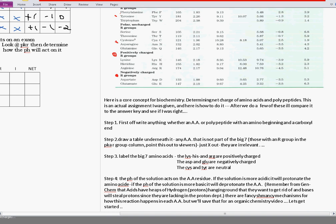Now, step four. The pH of the solution acts on the amino acid residue. If the solution is more acidic, it will protonate the amino acid. If the pH of the solution is more basic, it will deprotonate the amino acid. Remember from Gen Chem that acids have heaps of hydrogen, which are just protons hanging around, and they want to get rid of those.